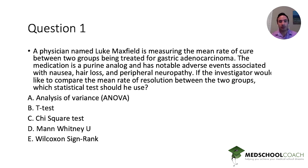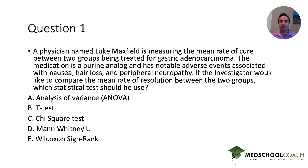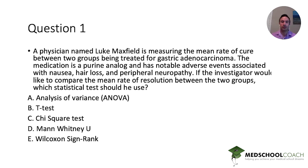A physician named Luke Maxfield is measuring the mean rate of cure between two groups being treated for gastric adenocarcinoma. The medication is a purine analog and has notable adverse events associated with nausea, hair loss, and peripheral neuropathy. If the investigator would like to compare the mean rate of resolution between the two groups, which statistical test should be used?